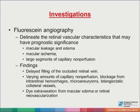Investigations for BRVO include fluorescein angiography, which delineates the retinal vascular characteristics that may have prognostic significance. These include macular leakage and edema, macular ischemia, as well as large segments of capillary non-perfusion. Findings on fluorescein angiograms include delayed filling of the occluded retinal vein, varying amounts of capillary non-perfusion, blockage from intraretinal hemorrhages, microaneurysms, telangiectatic collateral vessels, and dye extravasation from macular edema or retinal neovascularization.